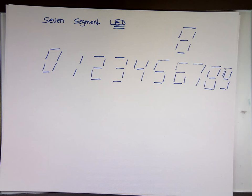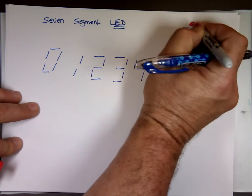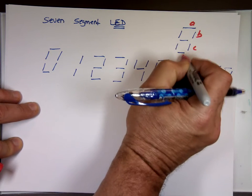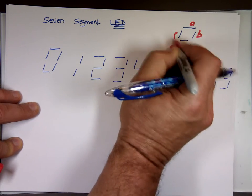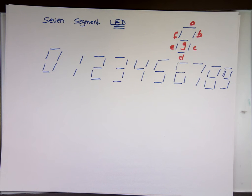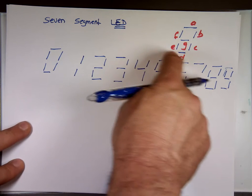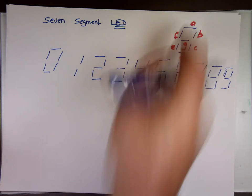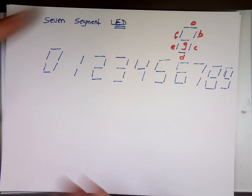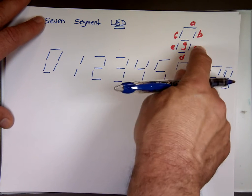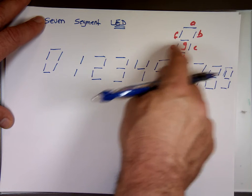So this is A, B, C, D, E, F, and this is the G. So you have multiple, you have actually, since you got one, two, three, four, five, six, seven, you have nine segments total.